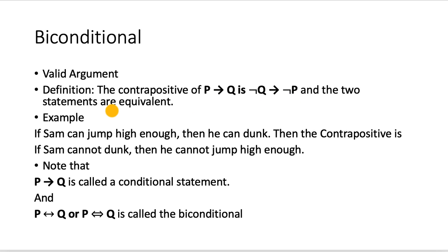So if Sam can jump high enough, then he can dunk. This is P implies Q. If Sam can jump high enough, then he can dunk. Then the contrapositive is if Sam cannot dunk, then he cannot jump high enough.